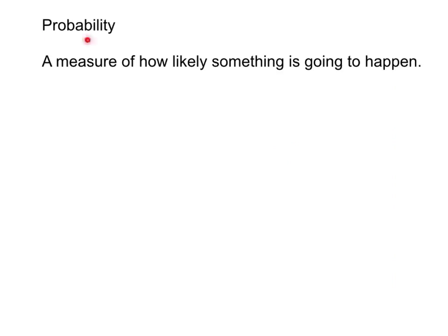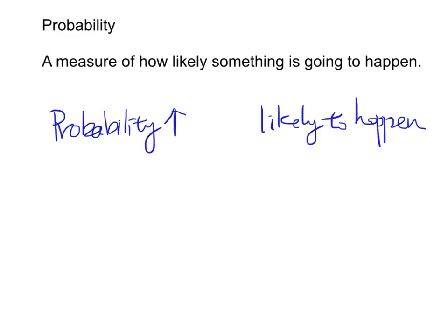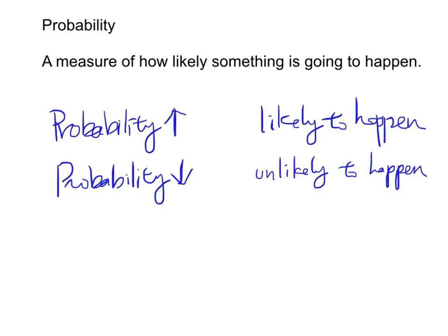And in fact probability actually means it's a measure of how likely something is going to happen. And if an event has a higher probability it means that it is very likely to happen. And if the event has a low probability then we can say that it is unlikely to happen.